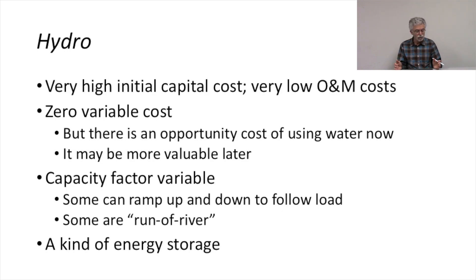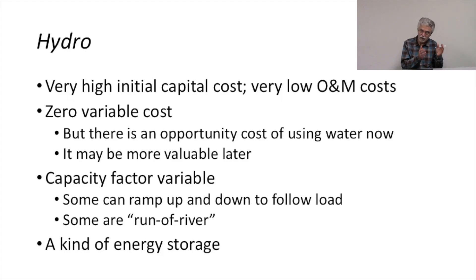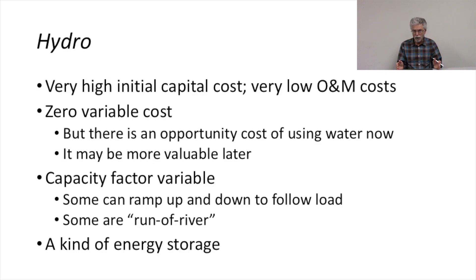The capacity factor for hydro is variable. For the dispatchable hydro facility, they can be ramped up and down very quickly to follow loads. They have the advantage of a really good ramp rate — a fast ramp rate — a very short time between when you decide to dispatch energy from the plant and when you can actually get the energy. So for a dispatchable hydro facility, they have very good ramping properties.